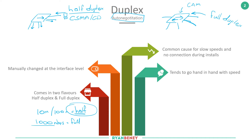Speed tends to go hand in hand with duplex. You can manually change the duplex at the interface level, and hopefully your WAN provider gives you both the duplex settings and the speed settings. Nine out of ten times duplex and speed are configured at the same time. Also keep in mind that on some platforms you cannot set the duplex without first specifying the speed, because depending on the speed of the link depends on the default duplex behaviour if it can't negotiate.